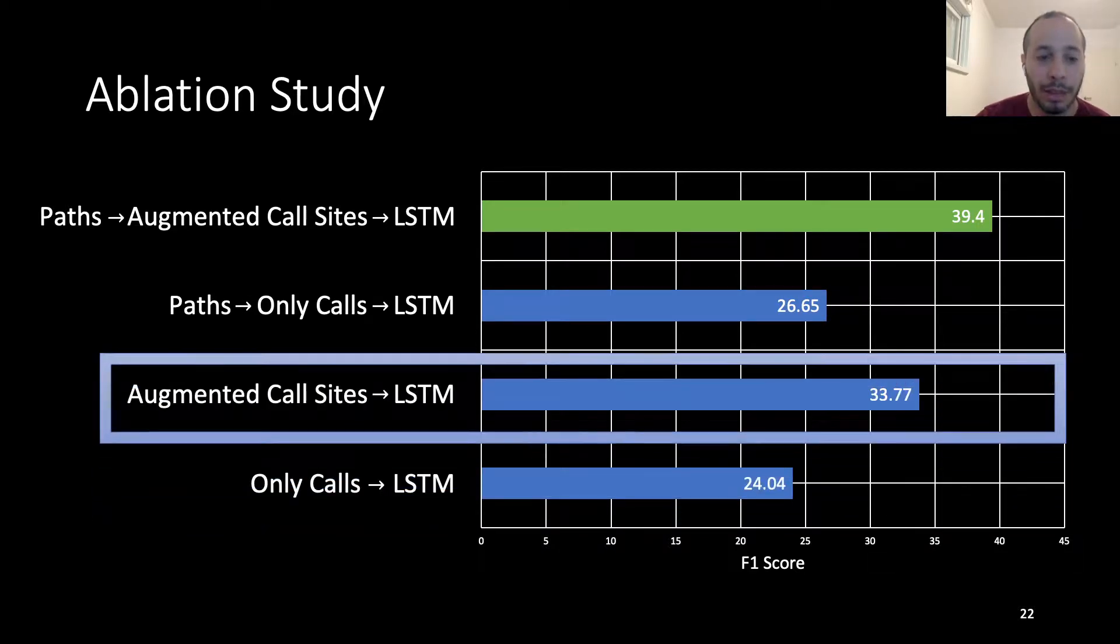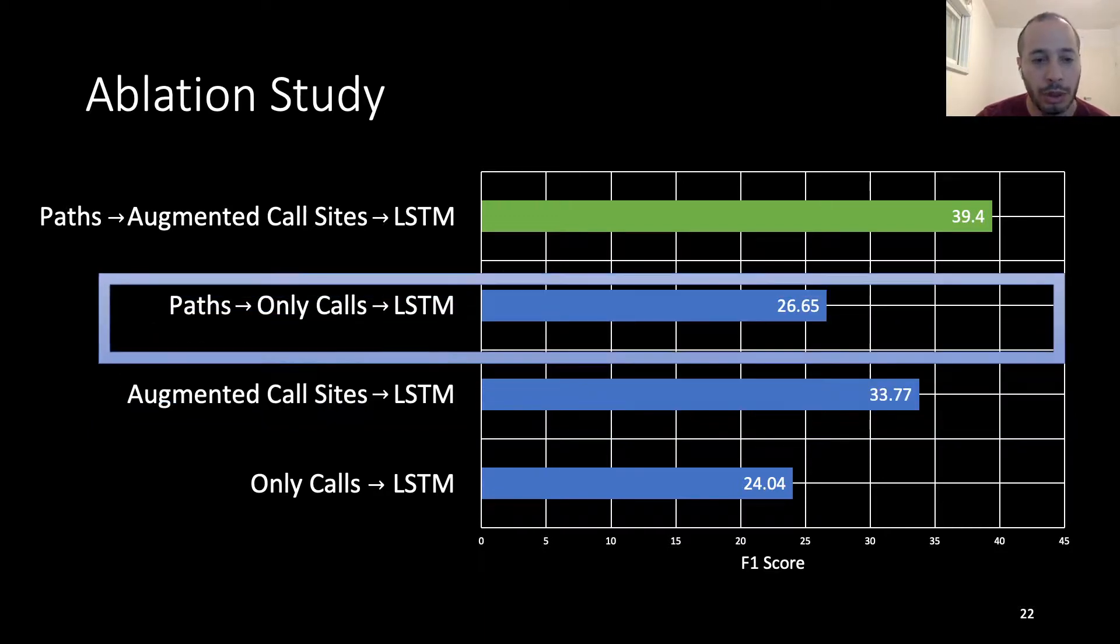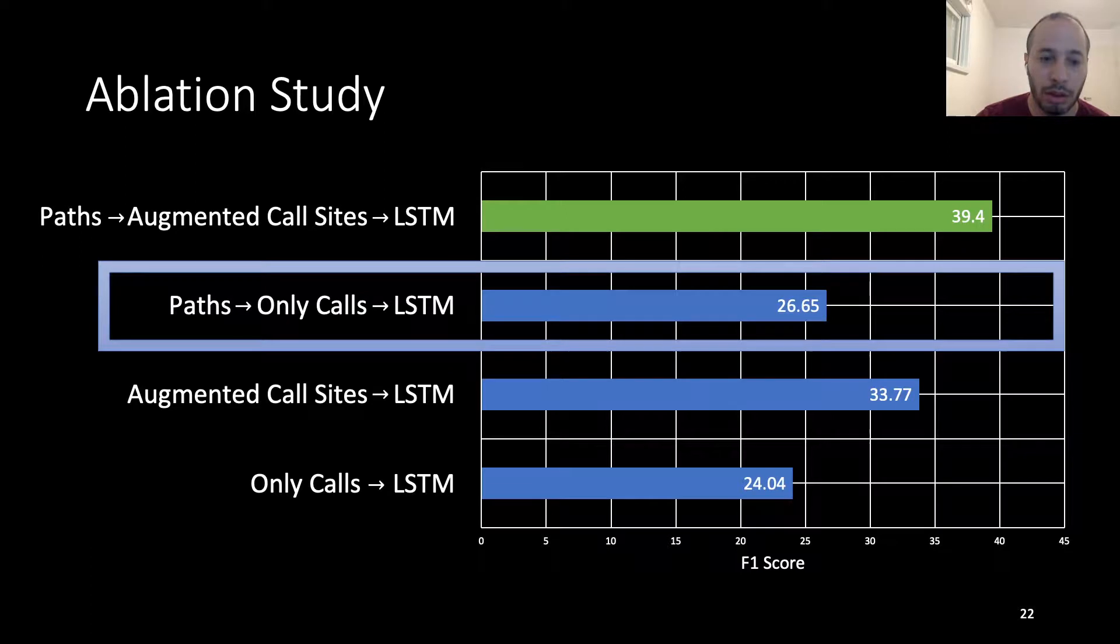Next, we augmented these call sites. This contributes to a very big increase in the F1 scores, but we are still far from the final results. Then we tried placing the calls, and only the calls without augmentation, in the right path. This again slightly increased the result, but still it is far gone from the final result, and just by augmenting the call sites, we see an almost 50% increase in F1 scores.